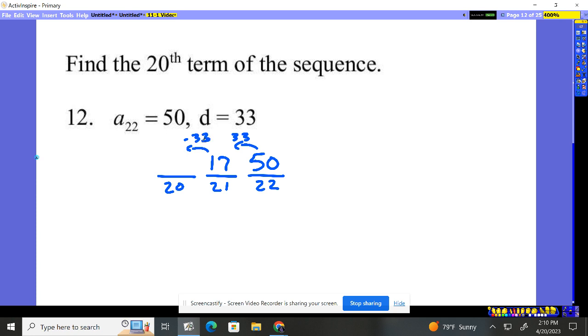If I go back 17 and then another 16, I'm going to be at negative 16. So if you do 17 minus 33, it'll give you the answer of negative 16, which is our answer for the 20th term in this arithmetic sequence.